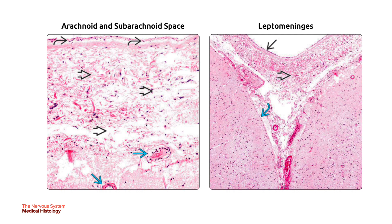On the left is the subarachnoid space — a potential space below the arachnoid membrane occupied by CSF. Superficial cerebral vessels and arachnoid trabeculae, which are connective tissue fibers between the arachnoid and the underlying pia, are also shown. On the right is a low-power view illustrating the relationship between the arachnoid — a thin layer of mesothelial cells — the subarachnoid space, and the pia mater — the delicate membrane covering the brain, adhering to your gyri and sulci.